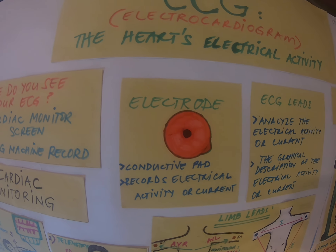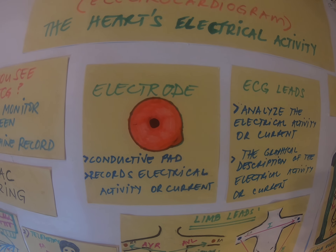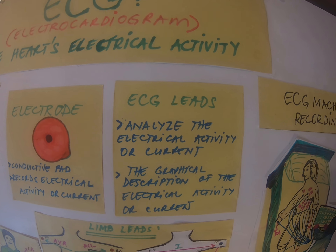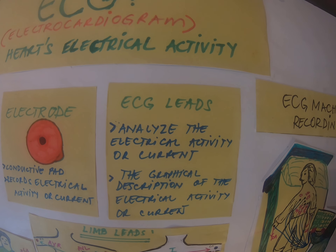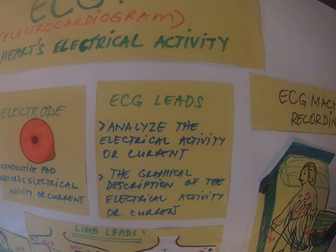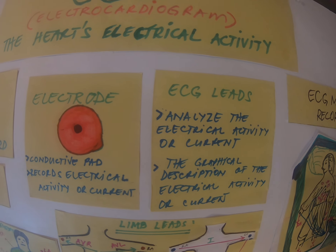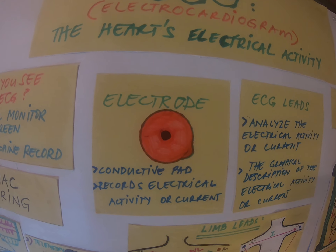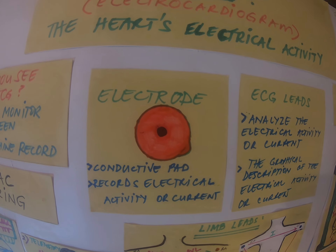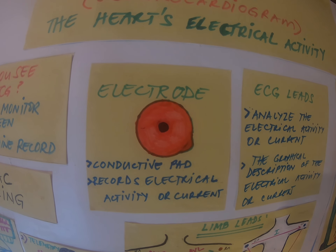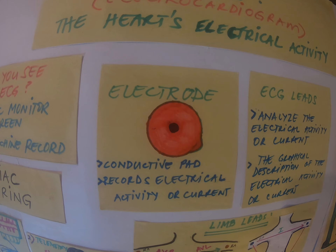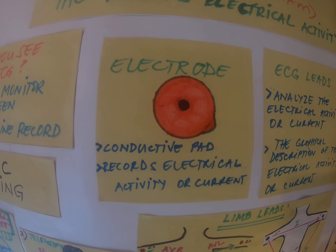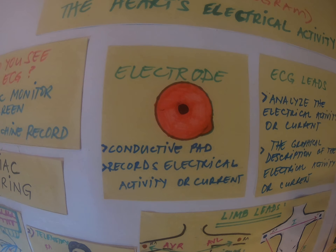To start your cardiac monitoring you need your electrodes, ECG leads with the wires, and the cables to the monitor. Before you apply your electrodes, be sure that the skin is clean, no hair, no oil, because these electrodes are conductive pads and they will record the electrical activity of the heart.